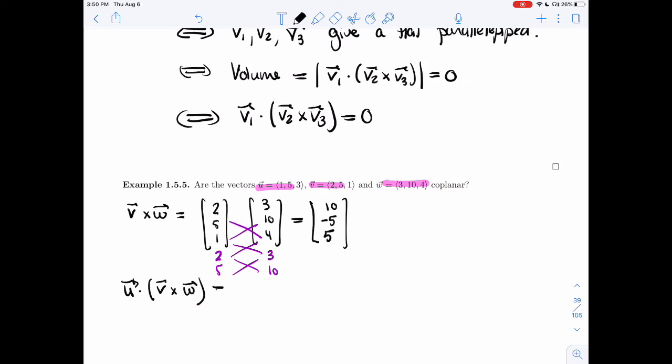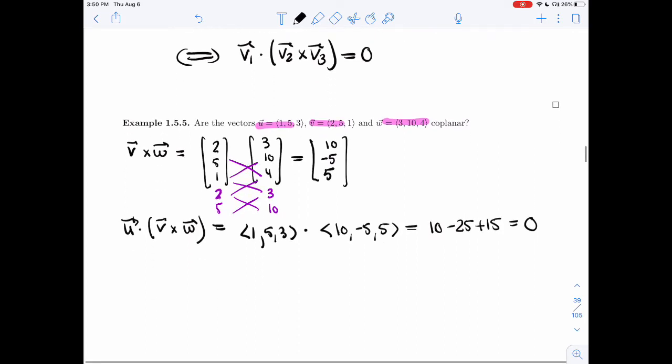And so if I take U dotted with V cross W, I get 1, 5, 3 dotted with 10, minus 5, 5, which is going to be 10 minus 25 plus 15, which is 0. All right, so we get that the triple scalar product gives me 0. And so yes, they are coplanar.